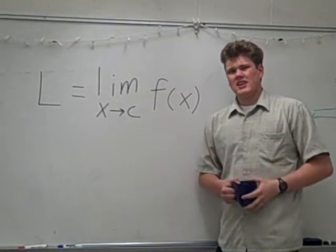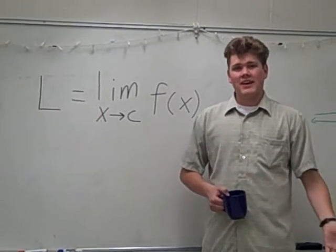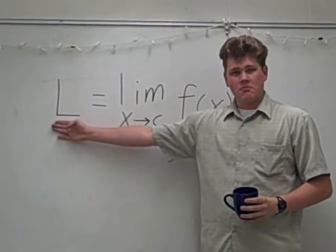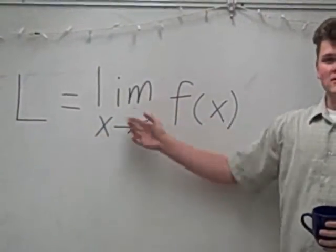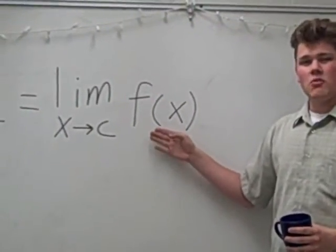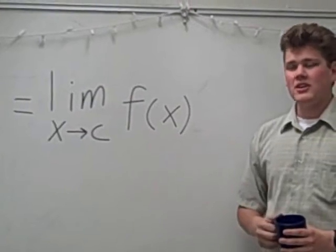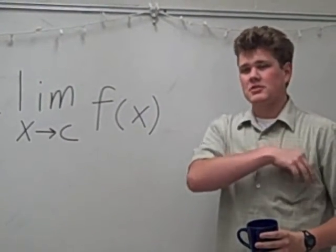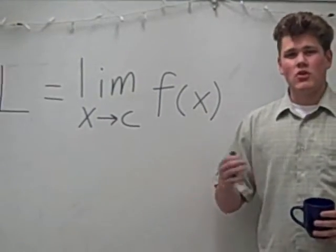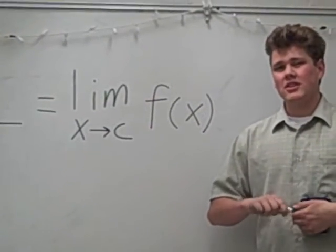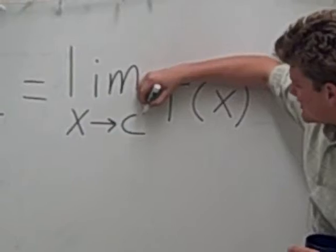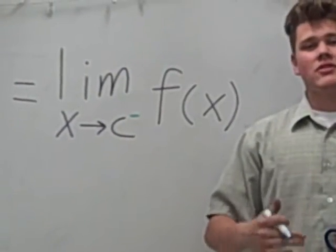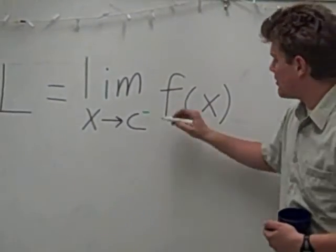Now this is the standard notation you'll see when you're asked to find a limit, for example in a worksheet or in your book. It can either be expressed as a big L or as this, where f of x is the function you want to find the limit in, and the point c is the point at which you want to find the limit. If it asks you to find the left-hand limit, there will be a little minus sign. And if it wants you to find the right-hand limit, it will instead be a plus.